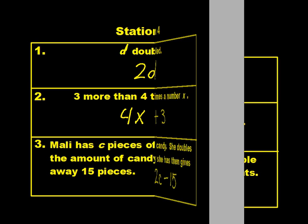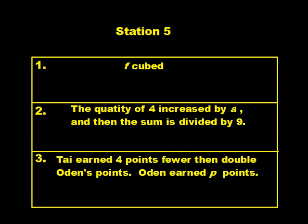On to station five, continuing in the same fashion. f cubed. Number two, the quantity of four increased by a, and then the sum is divided by nine. Four increased by a, divided by nine. Number three, Ty earned four points fewer than double Odin's points. Odin earned p points. Two p minus four.